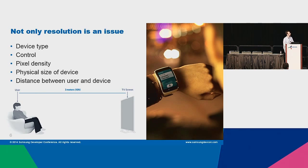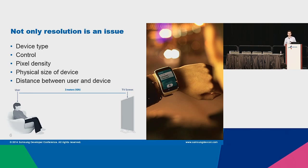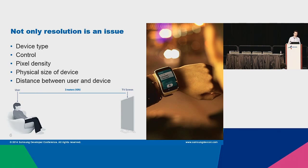Of course, when dealing with different devices, resolution is not the only issue. We have different device types. For example, you use a tablet slightly differently than a smartphone — a tablet is probably used with two hands and a smartphone with one. There are differences in controls: mobile devices are touchable, but if you create an app for TV, there is only a remote control. Pixel density is also an issue because devices have different pixel densities, so you need different graphic materials.